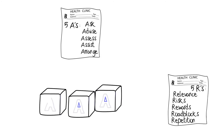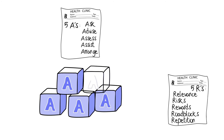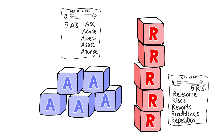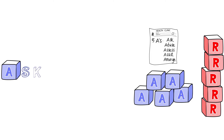In addition to the five A's and five R's, there are other brief tobacco interventions that may require even less time and may be useful in your clinical setting. You will notice that all of these interventions deliver the five A's, but some of them are delivered by other healthcare or public health organizations. All of the interventions in the clinical setting include the ask and advise steps from the five A's.